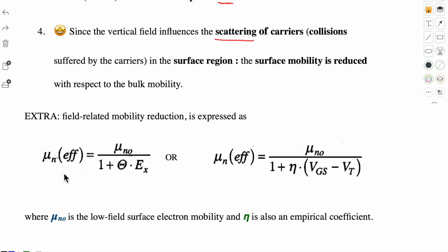So here we see a bonus concept. The effective surface mobility of the carriers is given by these two equations and both are related by E_x and V_GS minus V_T. μ_n0 is the low field surface electron mobility. Theta and eta are empirical coefficients. So in our short channel device, E_x and V_GS minus V_T reduce the surface mobility.